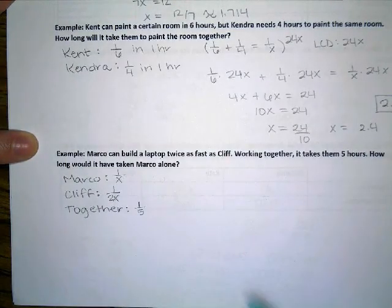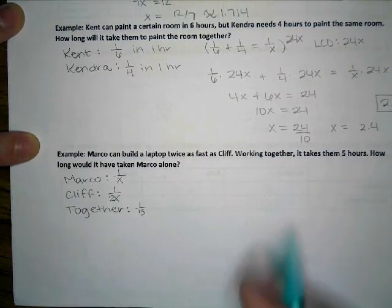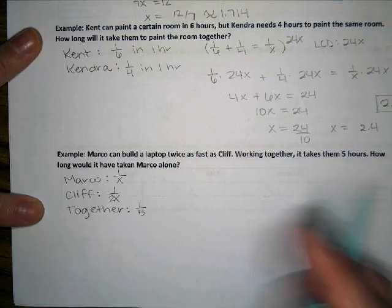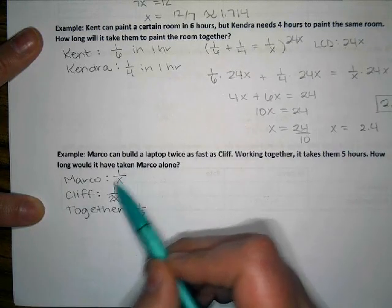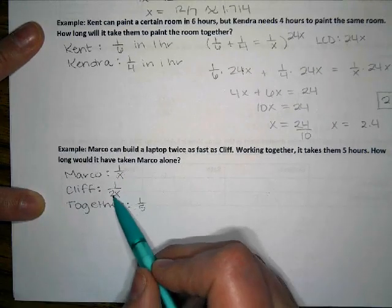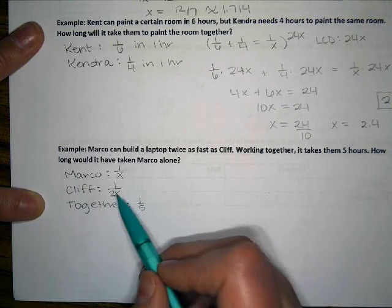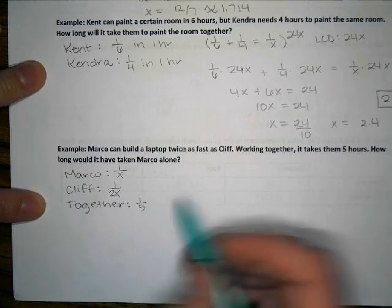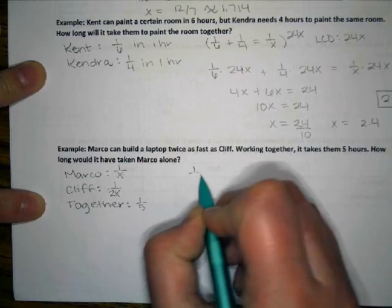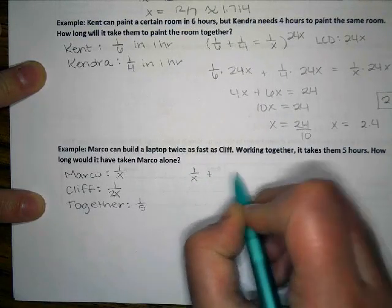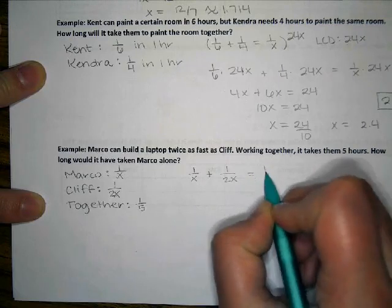If not, maybe rewind the video and go back and watch that explanation again. So now that we have Marco can do the job in X period of time, Cliff can do the job in 2X period of time, that's twice as long as Marco, and we know they can do the job together in five hours. We can set up our equation as one over X plus one over two X equals one over five.